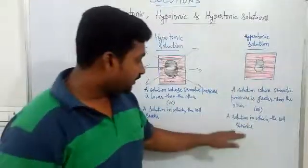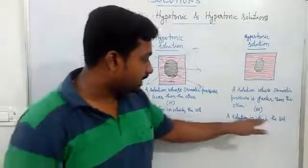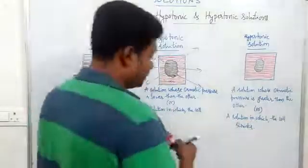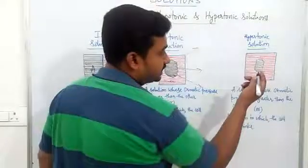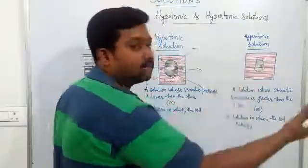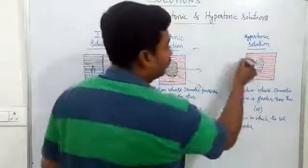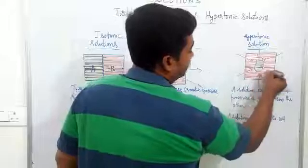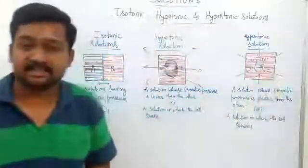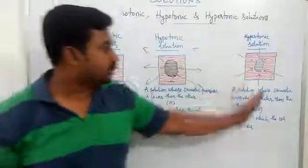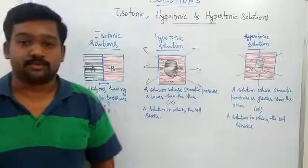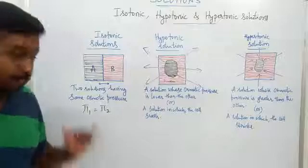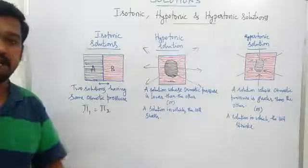When a cell is placed in a hypertonic solution, the cell shrinks. Shrinking happens because molecules move from inside the cell to the outside, causing shrinkage of the cell. So the size of the cell decreases. Such a solution is called hypertonic solution. These are the three different types of solutions based on osmotic pressure.